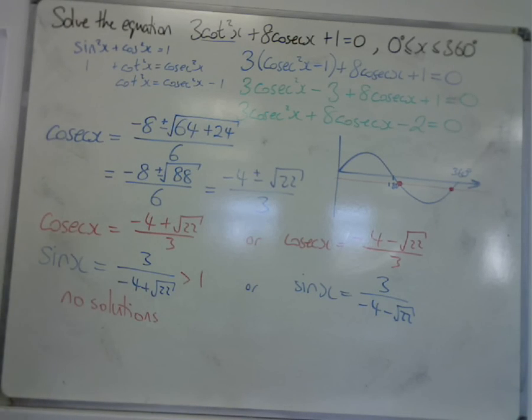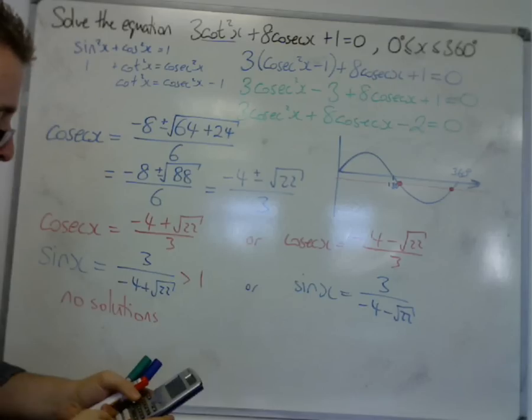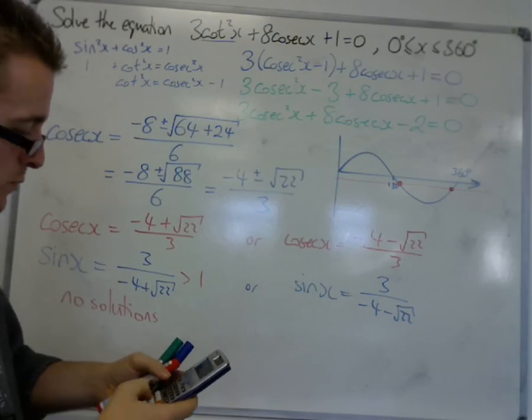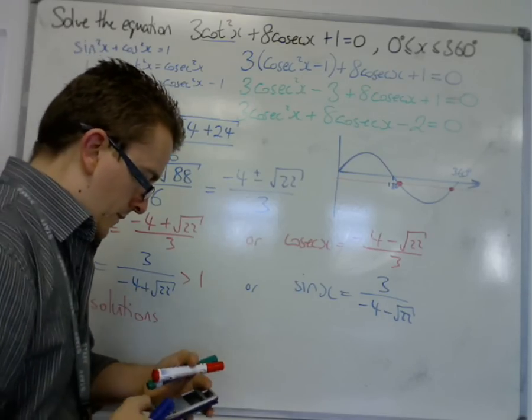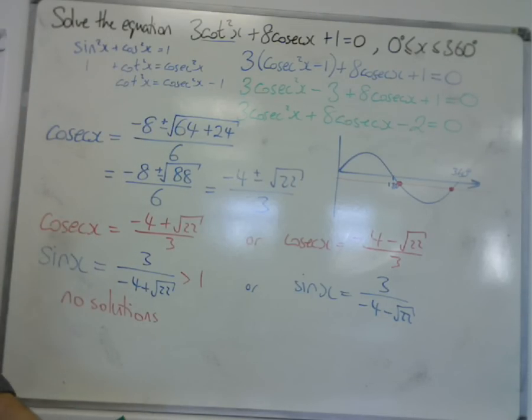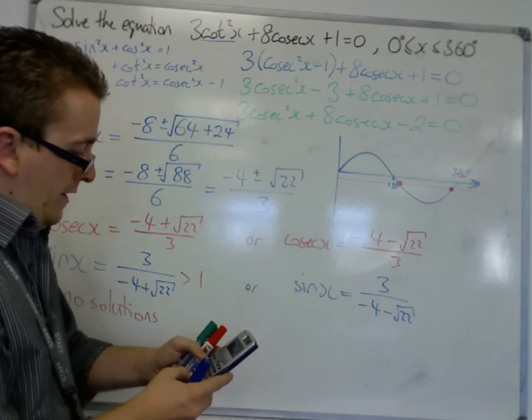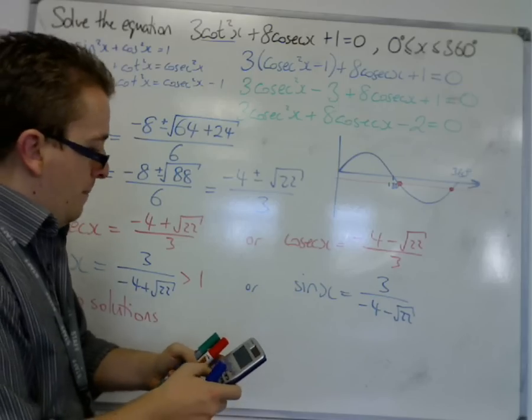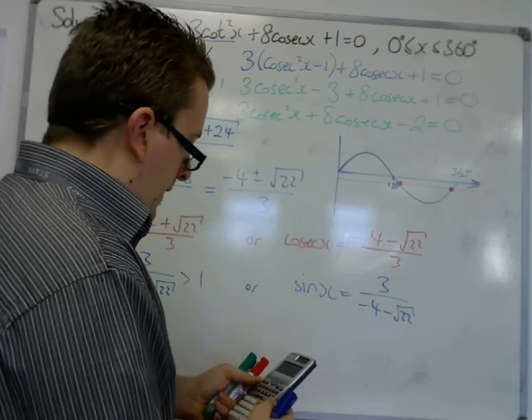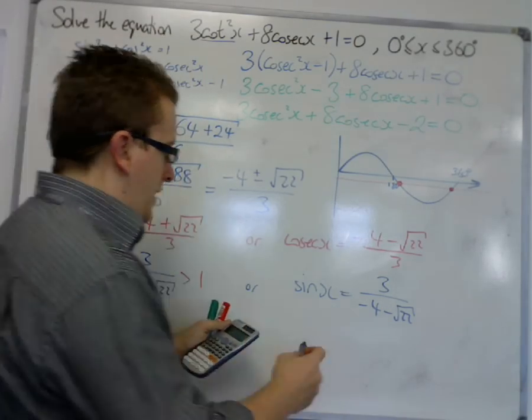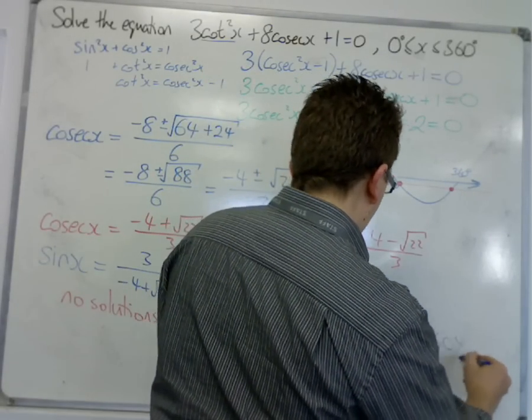We're going to have to do inverse sine of that, 3 over (-4 - √22). Oh and look, lo and behold, ladies and gentlemen, I am in radians, so I need to change it into degrees. So inverse sine of, let's have another go. -3 over (-4 - √22) is equal to -20.19448604. So that's given us a solution down here.